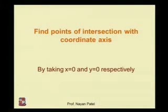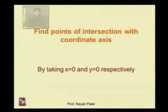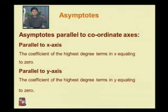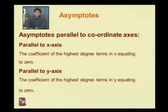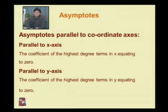The next step is to find the intersection with the coordinate axis by taking x = 0 and y = 0 respectively. Regarding asymptotes, there are three types: parallel to the x-axis, parallel to the y-axis, and oblique asymptotes.